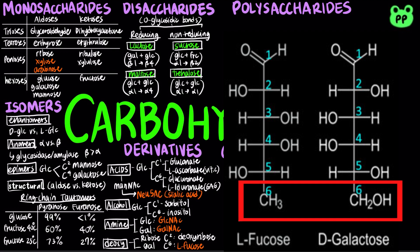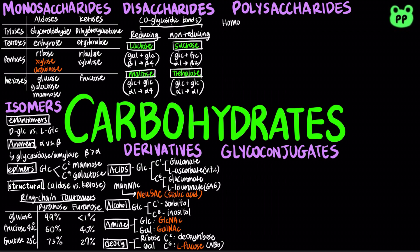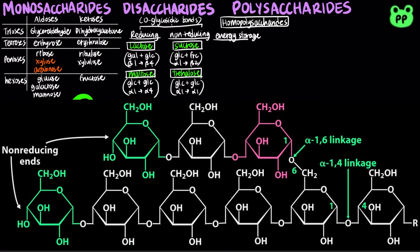Homopolysaccharides contain only a single monomeric species, whereas heteropolysaccharides contain two or more different kinds. Homopolysaccharides that function in energy storage include glycogen, which is the main storage polysaccharide of animal cells. It is a polymer of alpha-1,4-linked glucose, with alpha-1,6-linked branches every 8-12 residues.